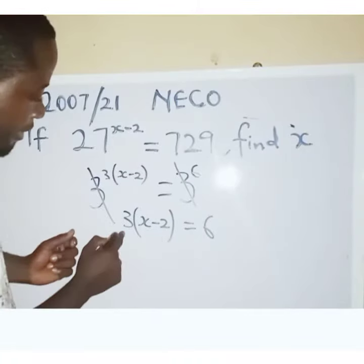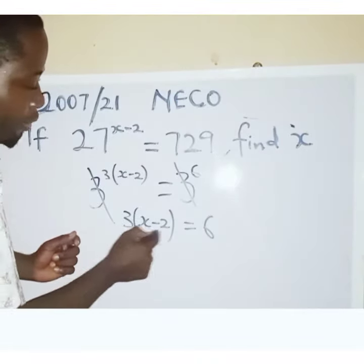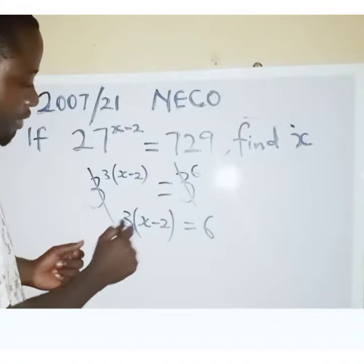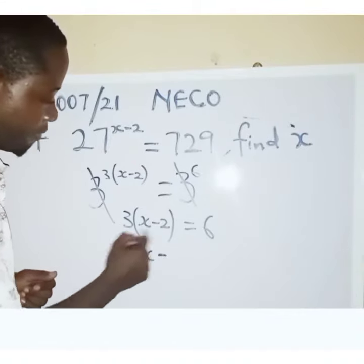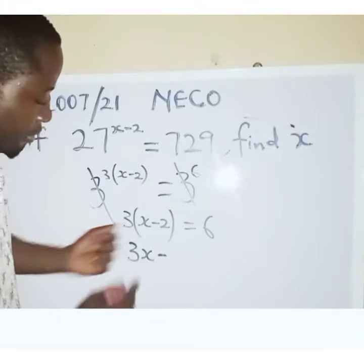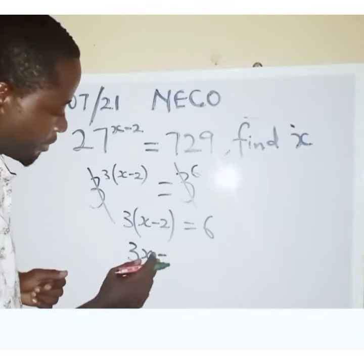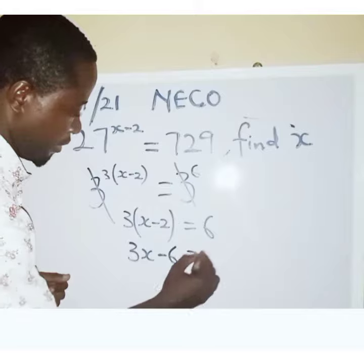Then the next thing is to use the 3 to multiply what we have in the bracket. So 3 multiplied by x, 3x minus 3 multiplied by minus 2. So that's going to give us minus 6 equals 6.